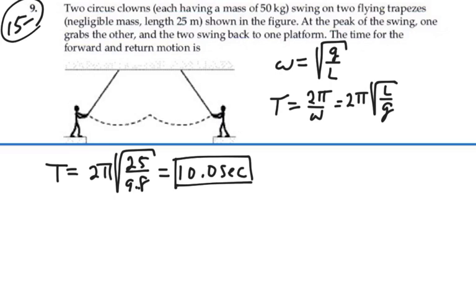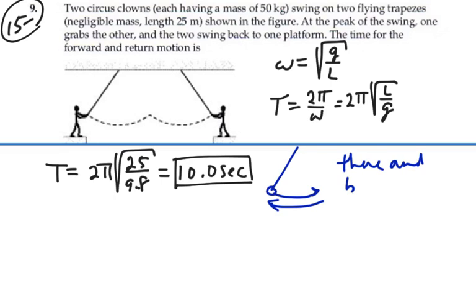However, if there were two people on that trapeze, it still wouldn't change. That would simply change the mass, but we see that this formula for the period is independent of the mass. So it would still have the same time to go there and back again. One full period is for the trapeze there and back again. So for one full there and back again — one full period — we have 10 seconds whether we have one person on the trapeze or two on the trapeze.